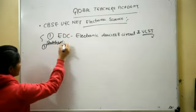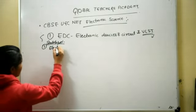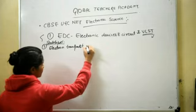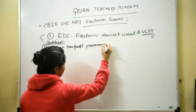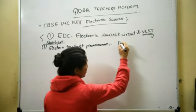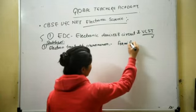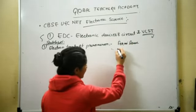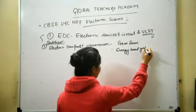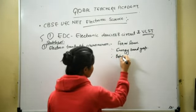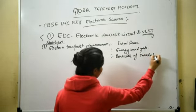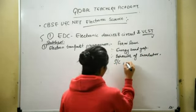The first topic of EDC is Electronic Transport Phenomena. In this topic, we discuss about the Fermi levels. Next is Energy Band Gap, followed by the behavior of Insulators, Semiconductors, and Metals.